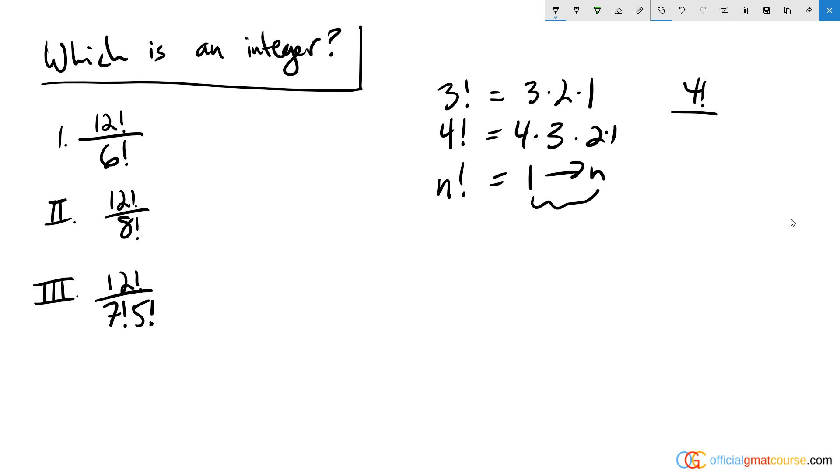So if we look at what happens when you divide 4 factorial by 3 factorial, what you'll notice is that 4 factorial includes 3 factorial inside of it. It has the exact same numbers and then it's just multiplied by 4.